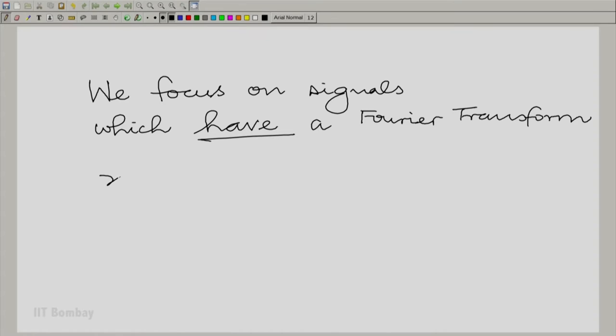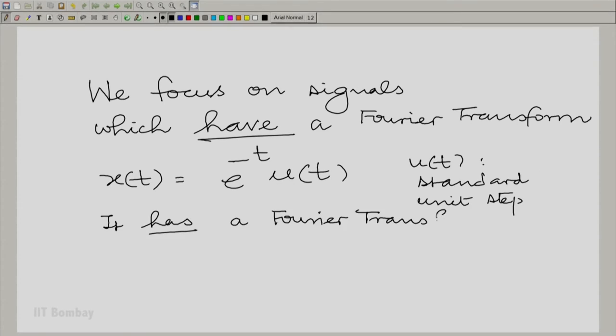Take x(t) = e^(-t)u(t), where u(t) is the standard unit step. This x(t) has a Fourier transform. It is also very easy to find the Fourier transform.